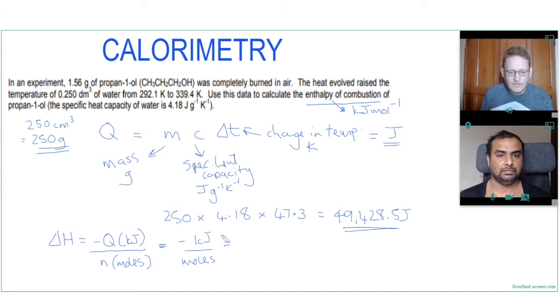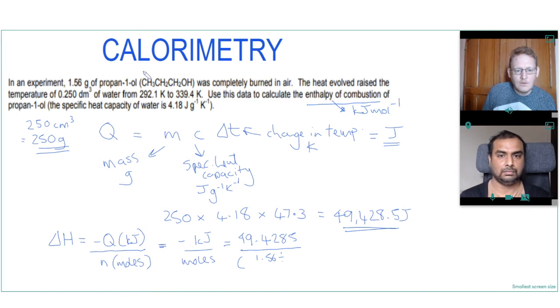And so our energy in kilojoules if we divide Q by 1000 we get 49.4285 and the number of moles, this is where our mass of propanol, the fuel we're burning, will come in because moles is mass over MR which is 1.56 divided by the MR of propan-1-ol which would be 15 plus 14 plus 14 plus 17, which is 60.